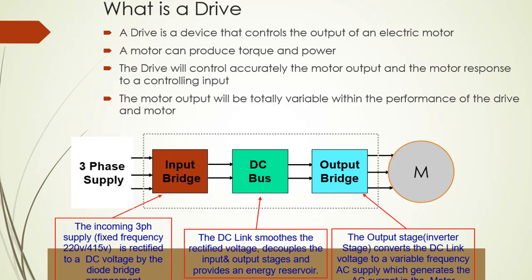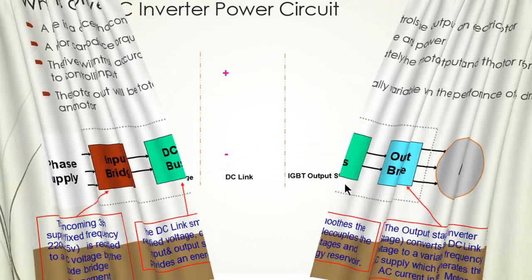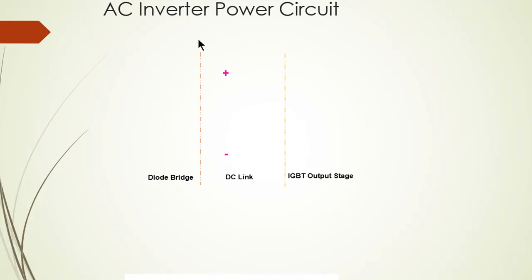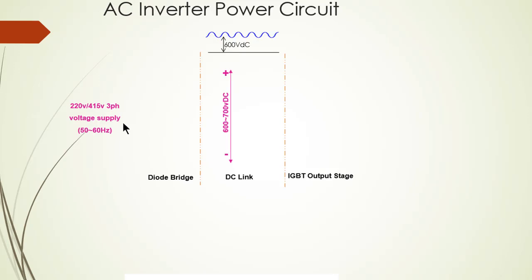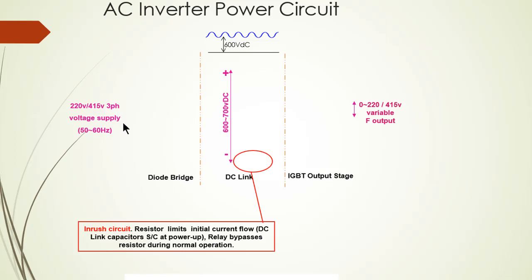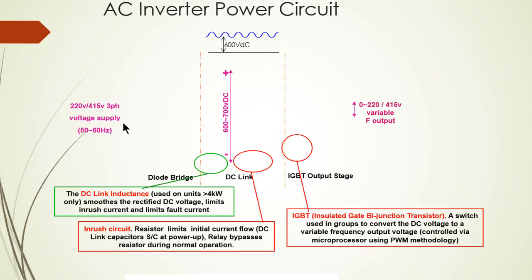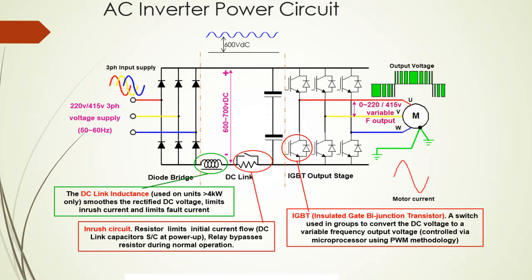The DC link smooths the rectified voltage, decouples the input and output stress, and provides an energy reservoir. The output bridge section then converts the pure DC from the DC bus — that is, the DC voltage — to AC voltage. The output bridge, or inverter stage, converts the DC link voltage to a variable frequency AC supply.